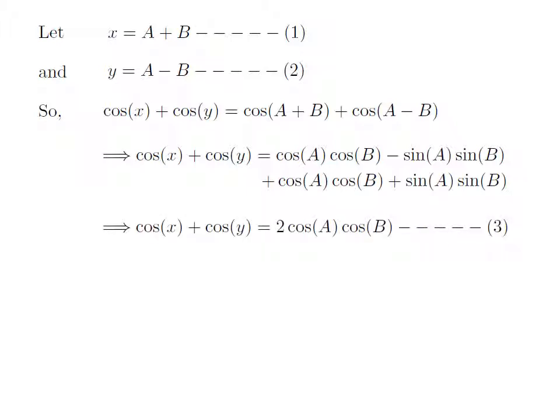In the above expression, minus sine of a times sine of b plus sine of a times sine of b will cancel out each other. So we are left with 2 times cosine of a times cosine of b. This implies cosine of x plus cosine of y is equal to 2 times cosine of a times cosine of b. Let's give this expression the number 3.